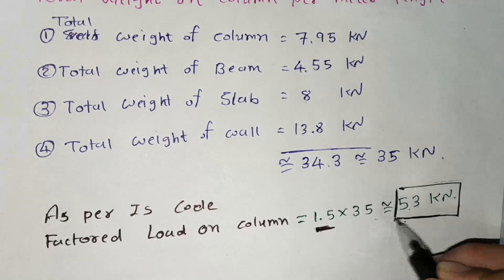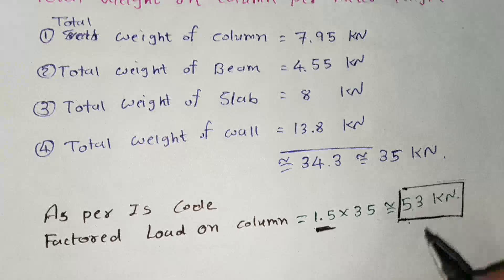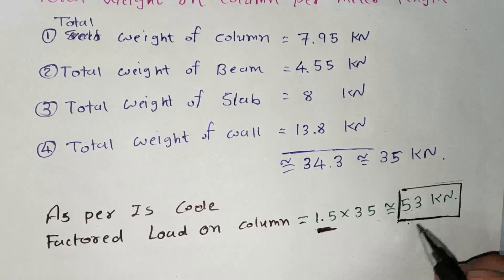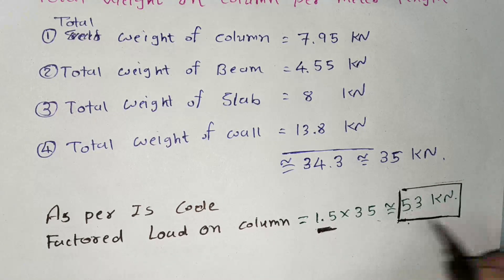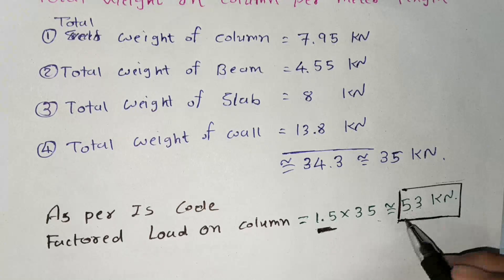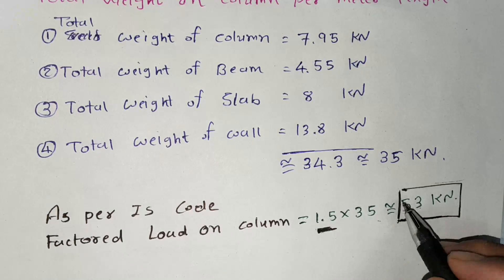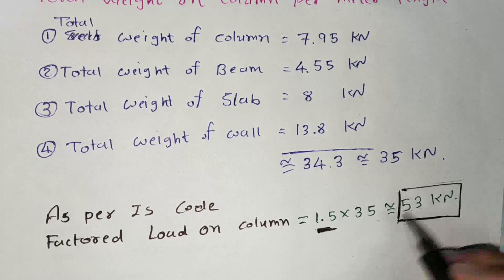So this is only one floor weight, so if we require more than one floor simply we have to multiply numbers of floor with the load. So we get total weight on column.